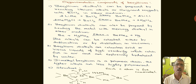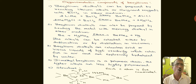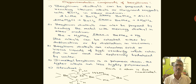Coming to the organometallic compounds of beryllium: beryllium dialkyls can be prepared by reacting lithium alkyls or Grignard reagents with beryllium chloride in ether medium. When methyl lithium is treated with beryllium chloride in ether, it gives dimethyl beryllium and lithium chloride. Similarly, a Grignard reagent like methyl magnesium chloride treated with beryllium chloride in ether gives dimethyl beryllium and magnesium chloride.